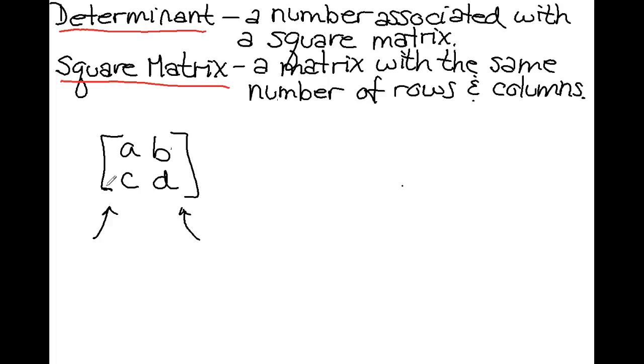If we want to take the determinant of a square matrix, it looks like this. The determinant of matrix A, B, C, D. That is also equivalent to this: A, B, C, D in between two straight lines. This means take the determinant of the square matrix A, B, C, D.